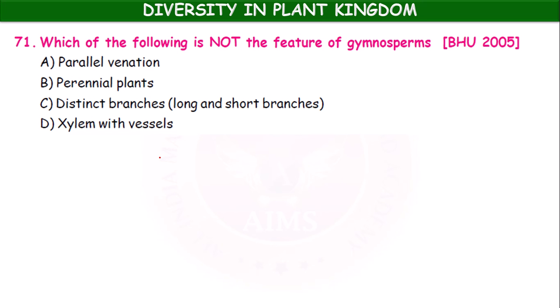Which of the following is not a feature of gymnosperms? The options are parallel venation, perennial plants, distinct branches, long and short branches, and xylem with vessels. Xylem with vessels is NOT a characteristic feature of gymnosperms.